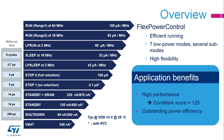STM32G0 devices support seven main low power modes: low power run, sleep, low power sleep, stop zero, stop one, standby, and shutdown modes. Each mode can be configured in many ways, providing several additional sub-modes.